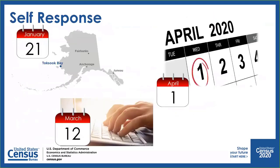Here you can see some important dates for self-response. We started off on January 21st with our remote Alaska operation. Now, regarding mailings and your invitation to respond — you will start seeing those arrive in your mailboxes between March 12th and the 20th. And then Census Day is April 1st. Many communities are going to plan events around this day. When you're filling out your form, we're asking you to respond with the data as of April 1st.